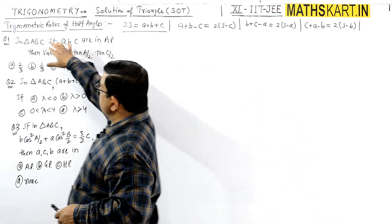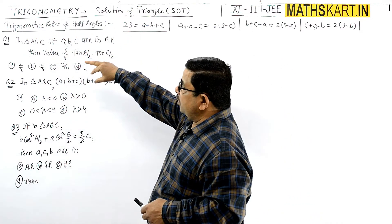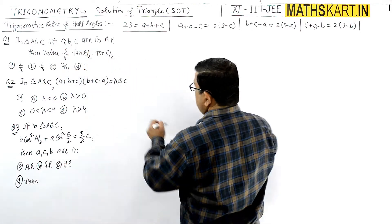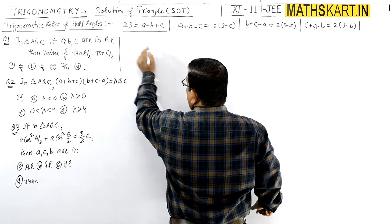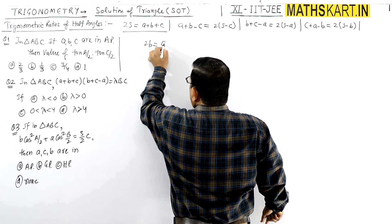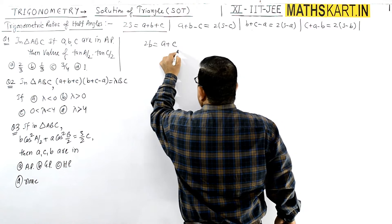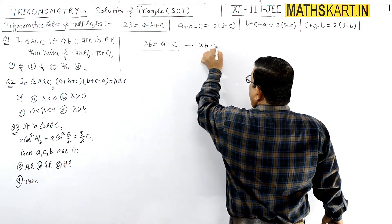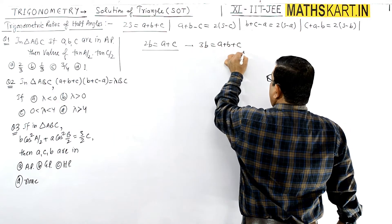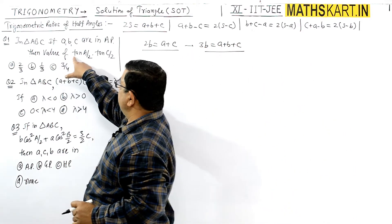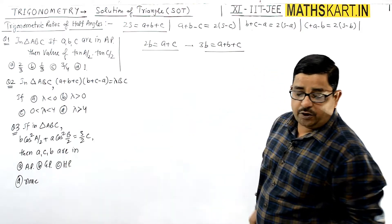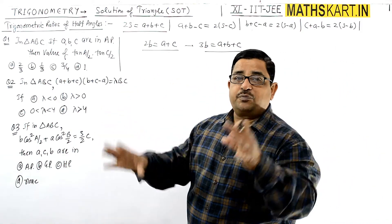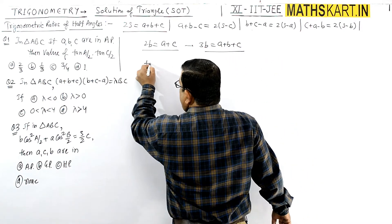Question number one is based on trigonometric ratios of half angles. In triangle ABC, angles A, B, C are in AP. So directly we write that if A, B, C are in AP then 2B = A + C. Adding B to both sides, 3B = A + B + C. We need to find the value of tan(A/2)·tan(C/2). Simply place the formula: tan(A/2)·tan(C/2) equals under root of [(S-B)(S-C)] / [S(S-A)] times under root of [(S-A)(S-B)] / [S(S-C)].